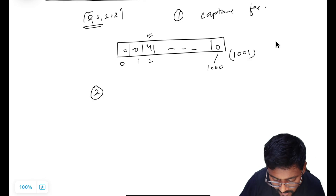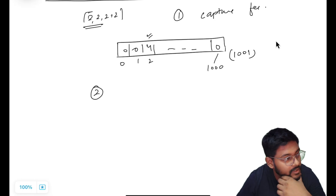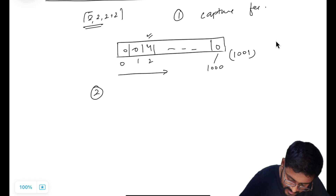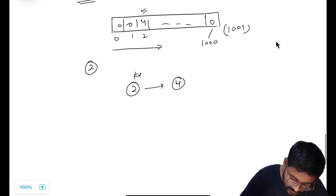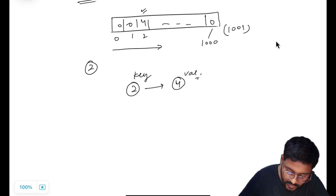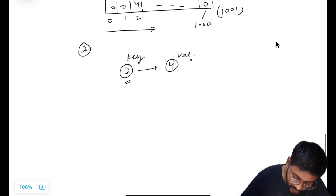This is my first step: capture the frequency. Second step: for every frequency I need to calculate the minimum number of groups to form. I iterate over this hash array — if answer 2 is coming four times, the key is 2, value is 4 — I need to figure out how many groups of size 2 plus 1 will be there.